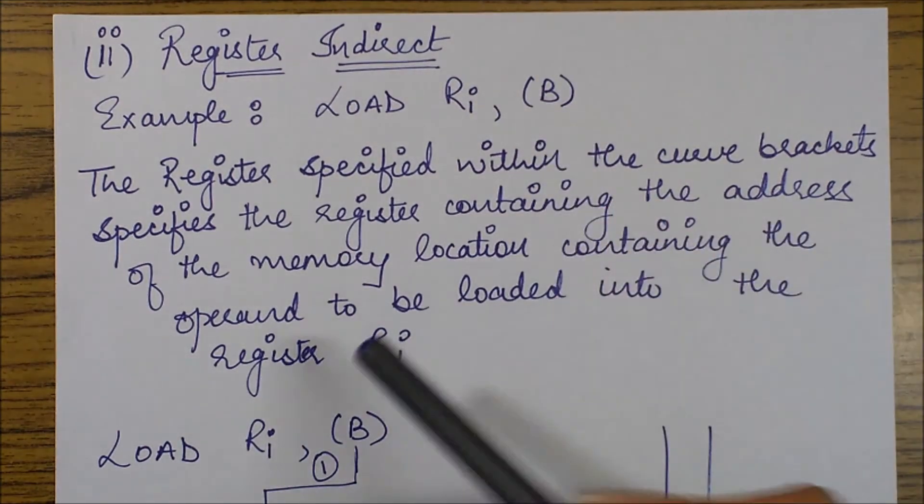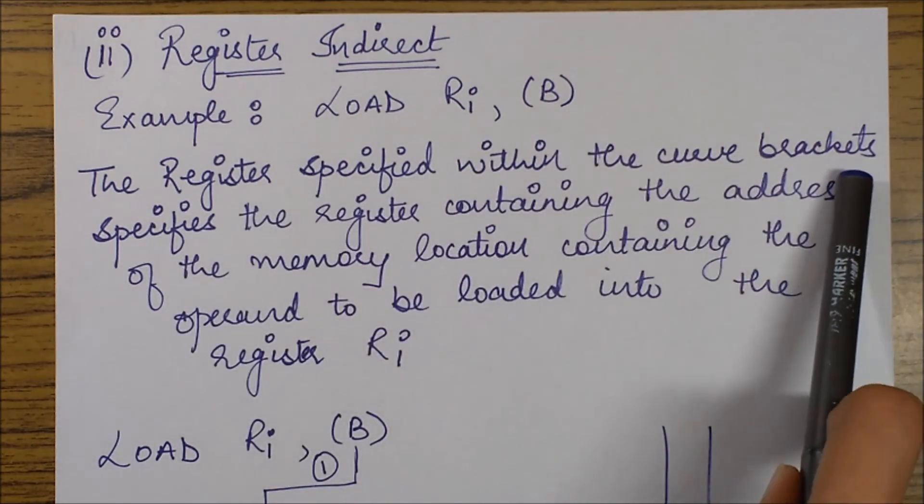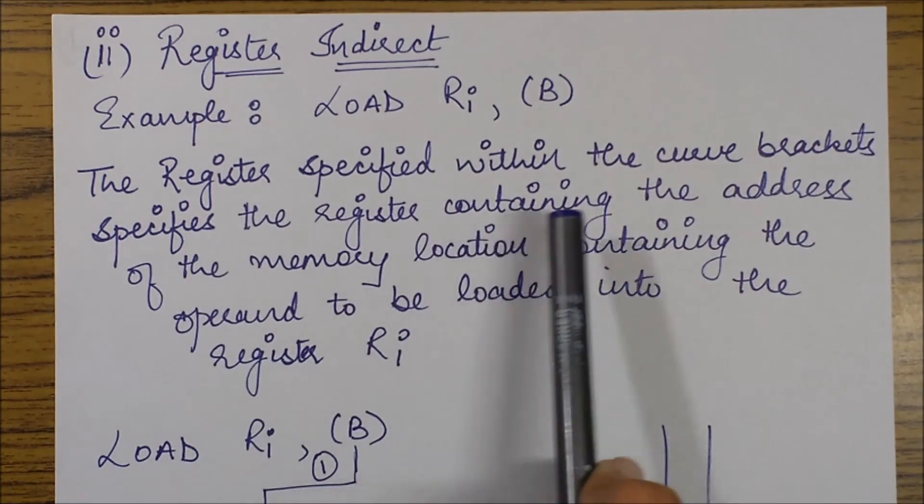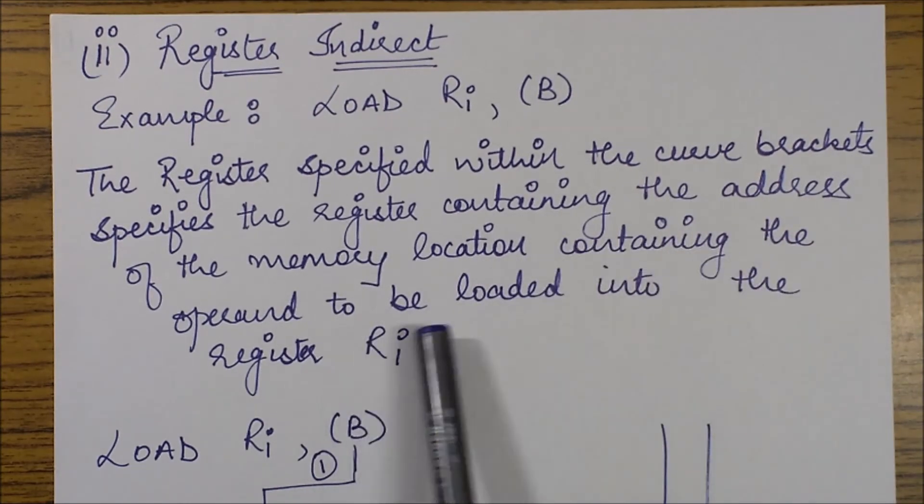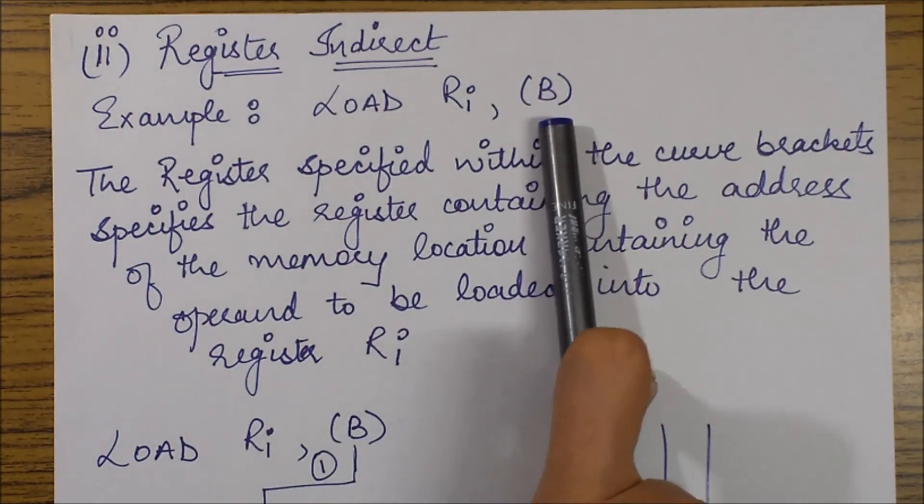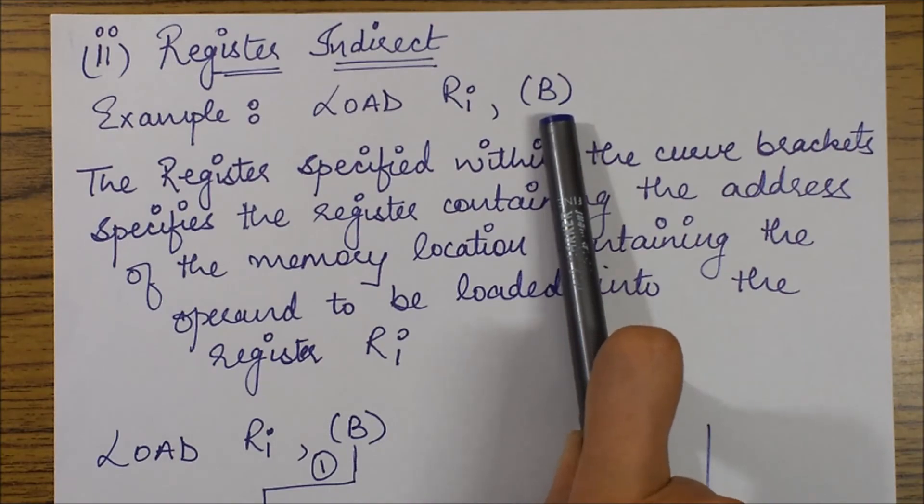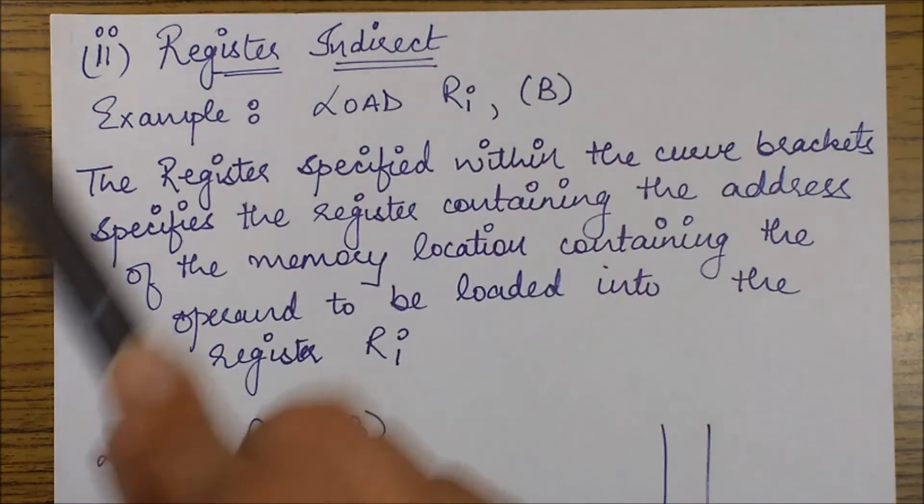So over here again, this B register, the register specified within the curve brackets specifies the register containing the address of the memory location containing the operand to be loaded into register Ri. So basically this is the register which contains an address, which is actually the address of the operand we need to load into Ri.